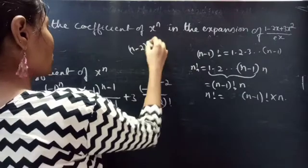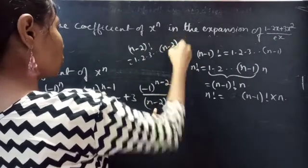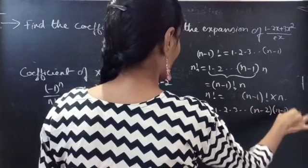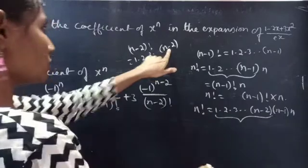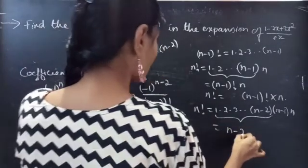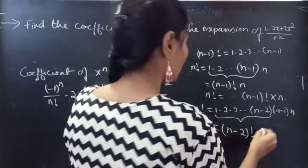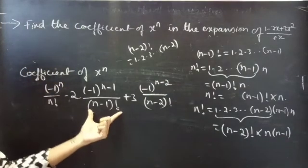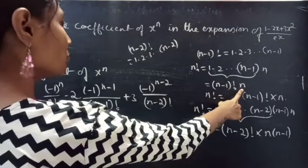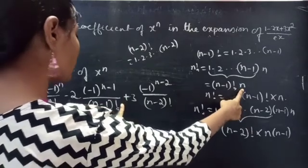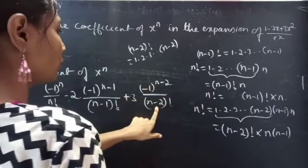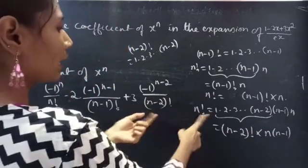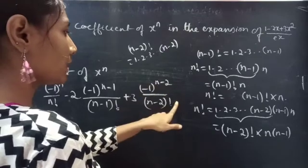Also, n minus 2 factorial times n times n minus 1 equals n factorial. So for the third term we multiply and divide by n into n minus 1 in order to replace n minus 2 factorial with n factorial in the denominator.